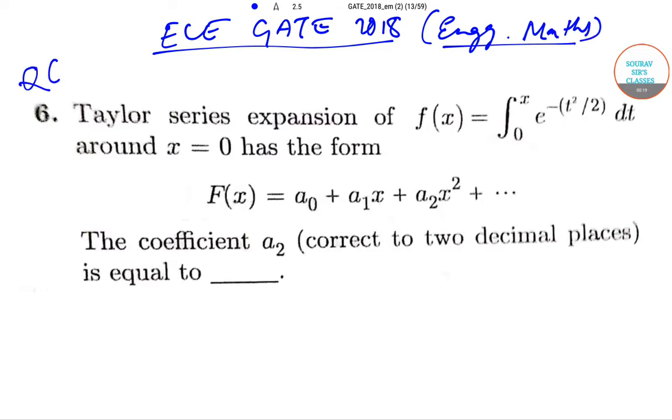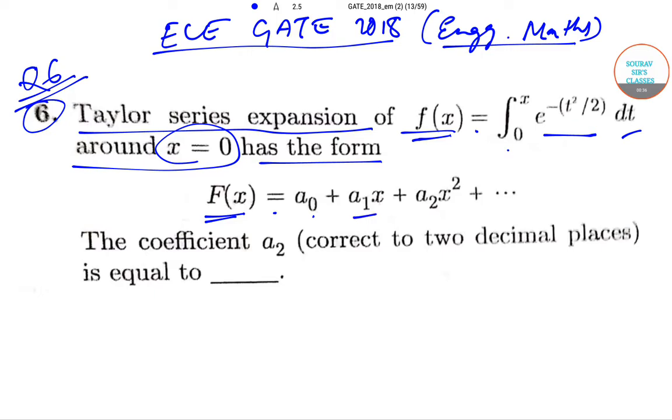We will be starting with question number 6. The question states that a Taylor series expansion of f(x) = ∫₀ˣ e^(-t²/2) dt around x = 0 has the form F(x) = a₀ + a₁x + a₂x² + ...